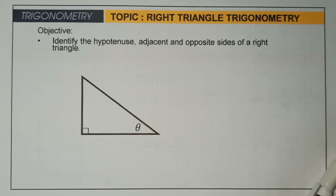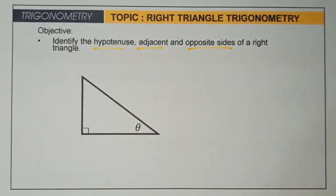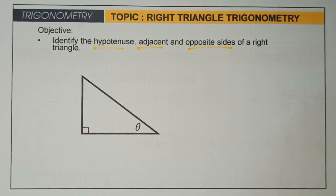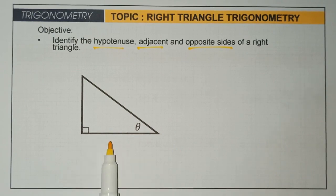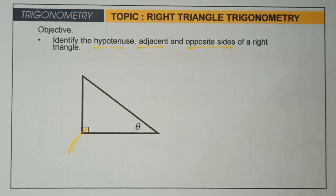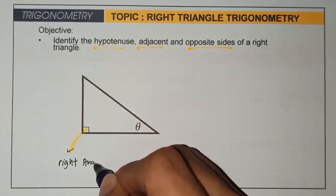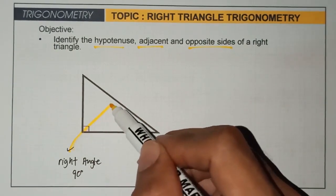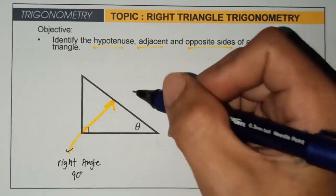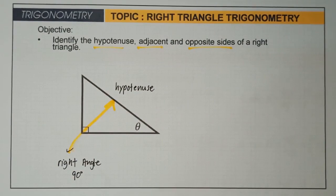Now, identify the hypotenuse, the adjacent, and the opposite side of a right triangle. In getting the hypotenuse of a right triangle, always remember the position of the right angle. In this triangle, this is the position of the right angle and its measure is 90 degrees. The side opposite to the right angle is the hypotenuse of a right triangle.